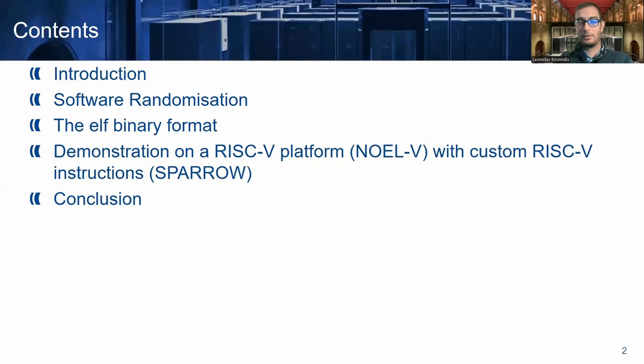These are the contents of my presentation. We are going to start with an introduction. We will discuss what software randomization is and how it can be implemented. Then we will explain the details of the ELF binary format. We will demonstrate our method on a RISC-V platform, in particular NOEL-5, with custom RISC-V instructions like the Sparrow AI Accelerator that we have developed in our group. And finally, we will conclude this presentation.